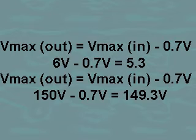In the second circuit, the peak output voltage is determined by the equation V sub max out is equal to V sub max in minus 0.7 volts or 149.3 volts.